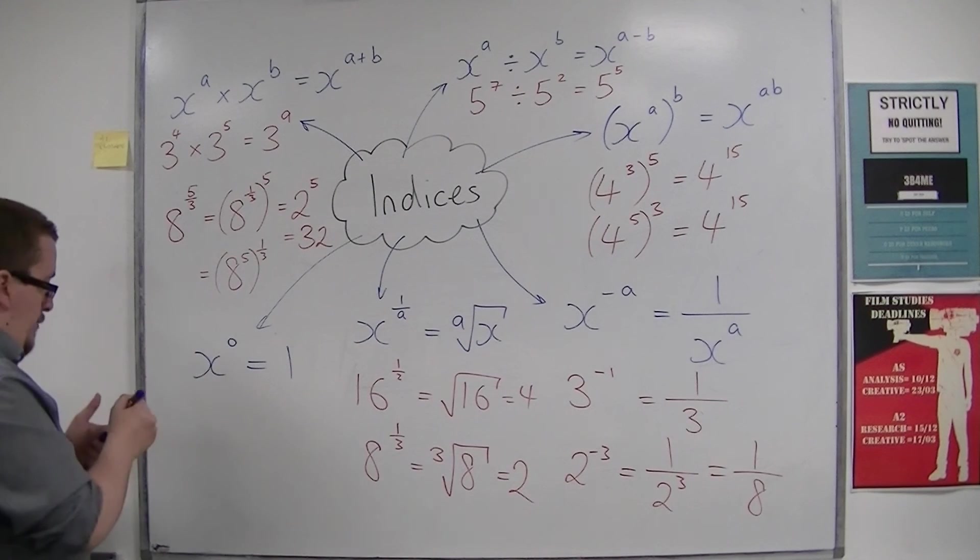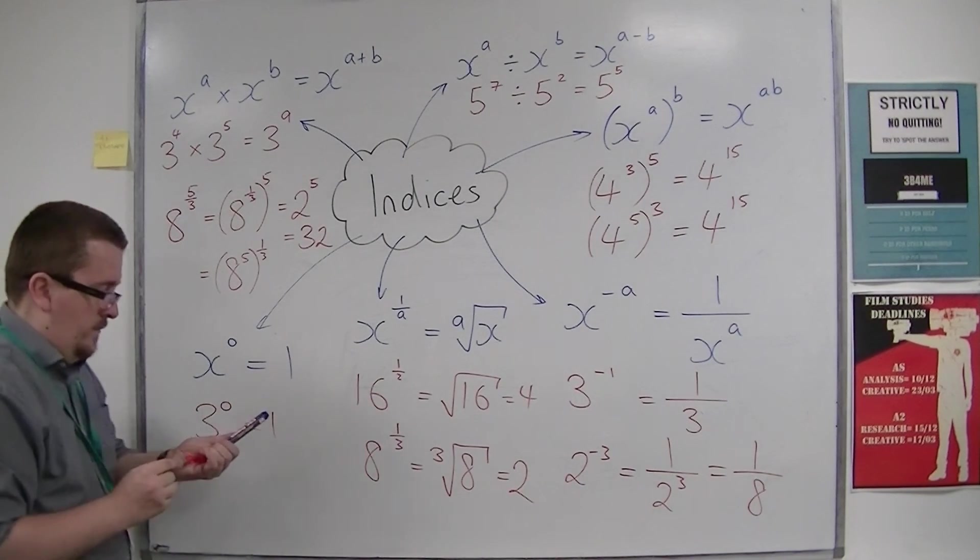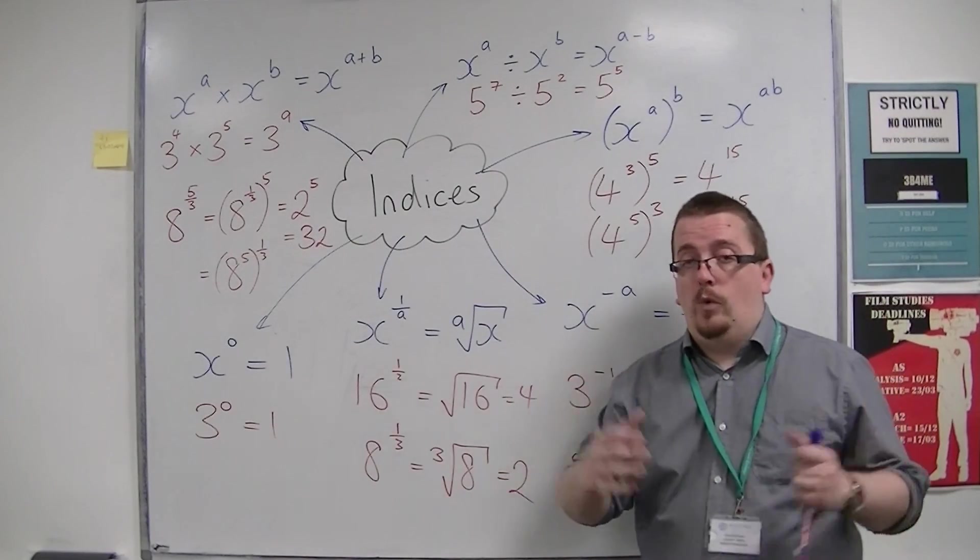So 3 to the power of 0, for example, is 1. 4 to the power of 0 is 1. A million to the power of 0 is 1.